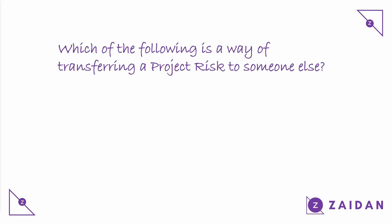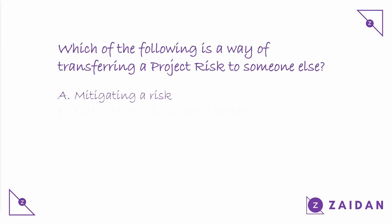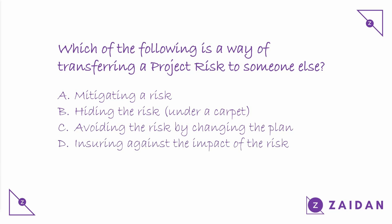Here is a question I have on risk — let us see whether you can answer it. Which of the following is a way of transferring a risk to someone else? You don't have to be a project manager to answer this question; you can go by the meaning of these words. 1. Mitigating a risk. 2. Hiding the risk. 3. Avoiding the risk by changing the plan. 4. Ensuring against the impact of the risk. You will get the answer by the end of this video.